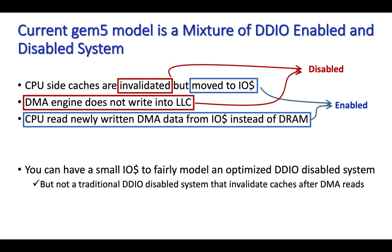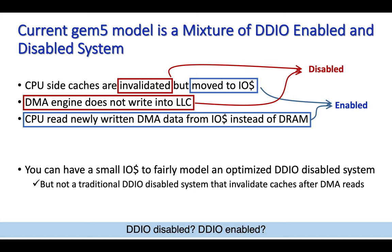Let's examine the overall GEM5 I/O model in terms of its match with DDIO-enabled or disabled systems. We identified that the current GEM5 model is a mixture of DDIO-enabled and disabled behavior, which can lead computer architects to capture inaccurate results or gain false insights. In the slide, characteristics belonging to a DDIO-disabled system are highlighted in red and those belonging to a DDIO-enabled system in blue. We can size the I/O cache to be very small to model an optimized system similar to Xeon processors near Sandy Bridge, but GEM5 is still short in modeling both a traditional non-DDIO system and a modern DDIO-enabled system.